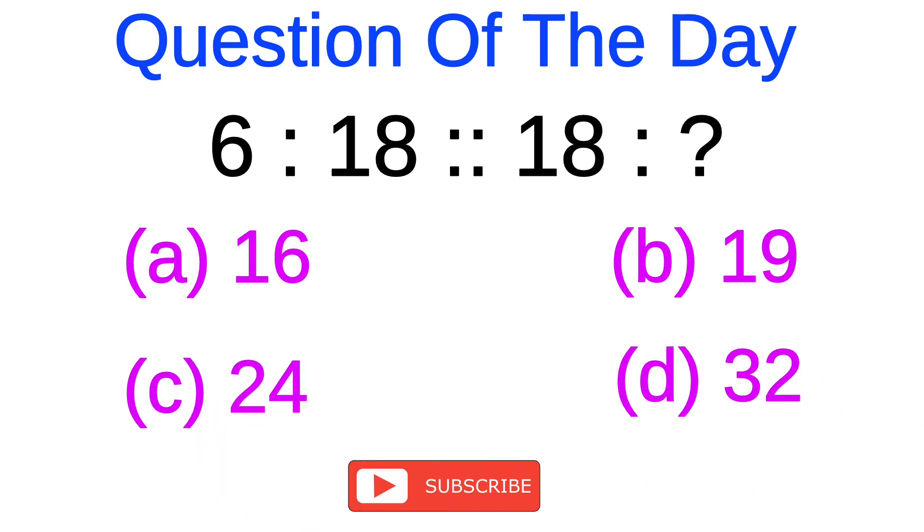So let's start. The analogy here can be: if we multiply 6 by 3 we get 18. Similarly, multiply 18 by 3 we get 54. But as we can see, 54 is not in any of the options, so we have to think about it in another way.